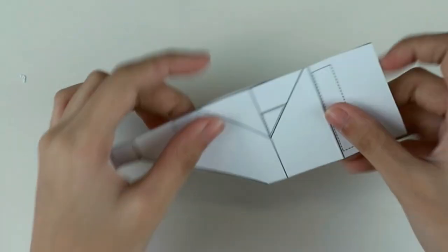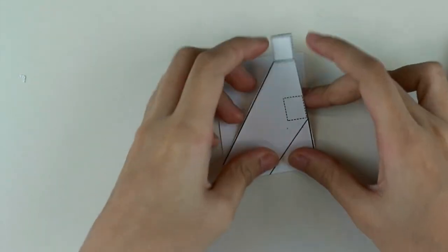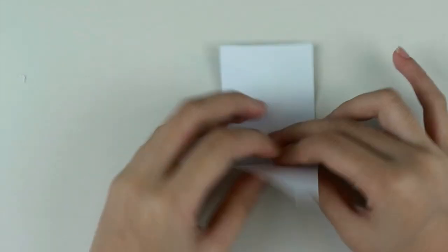Now, let's assemble the pop-up arm and the carriage. First, take the pop-up arm and fold along all the solid lines.